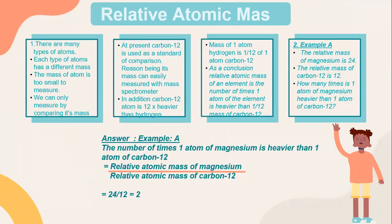Let's look into the first topic: relative atomic mass. There are many types of atom. Each type of atom has a different mass, and the mass of an atom is too small to measure directly. We can only measure it by comparing its mass. At present, carbon-12 is used as a standard of comparison, because its mass can easily be measured with a mass spectrometer. Carbon-12 atom is 12 times heavier than hydrogen. The mass of one atom of hydrogen is 1/12 of one atom of carbon-12. As a conclusion, relative atomic mass of an element is the number of times one atom of the element is heavier than 1/12 the mass of carbon-12.